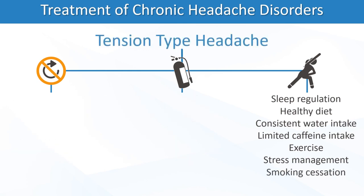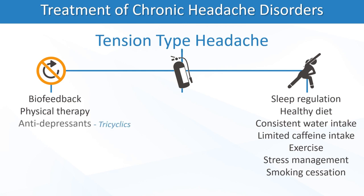Chronic tension-type headache prevention entails limiting triggers through lifestyle modifications, biofeedback, and physical therapy. Tricyclic antidepressants are the most evidence-based preventative pharmacotherapy. Rescue treatments include NSAIDs, acetaminophen, and aspirin, but appropriate counseling is needed to limit the risk for medication overuse headache.